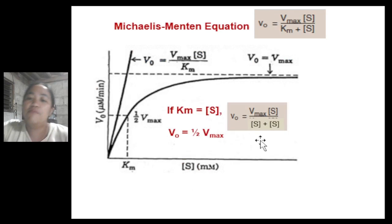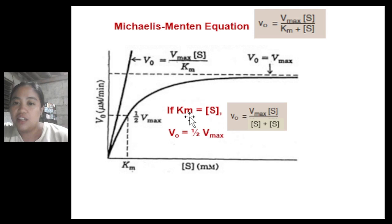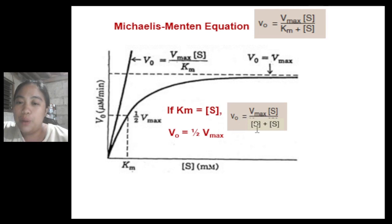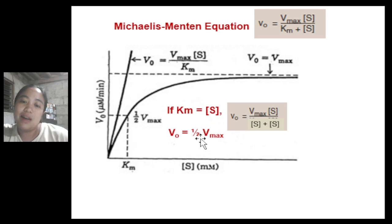When the rate of reaction is half of its maximum value, the substrate concentration is equal to the Michaelis constant Km. For example, substituting [S] = Km into the Michaelis-Menten equation, the initial velocity equals one-half of the maximum velocity. So when the rate of reaction is half its maximum value, the substrate concentration is equal to the Michaelis constant.